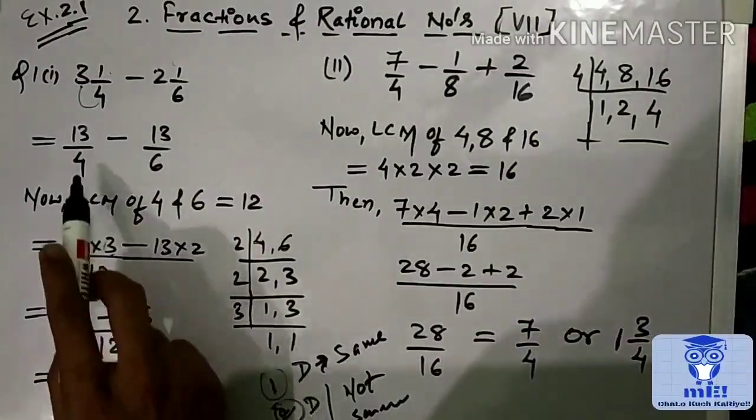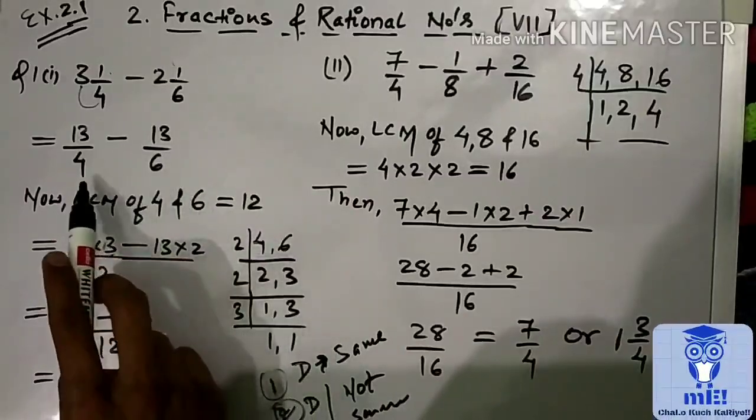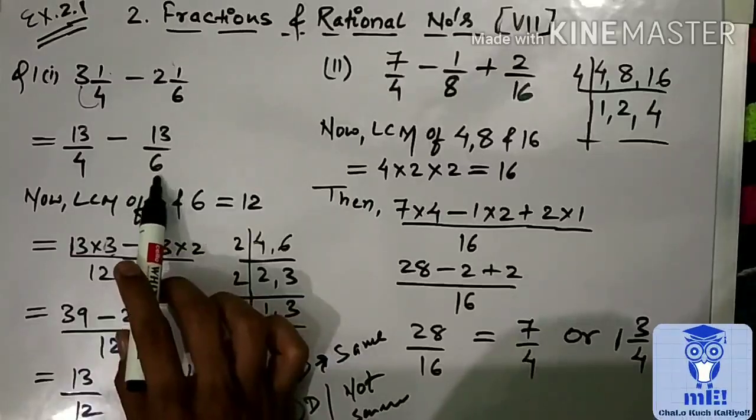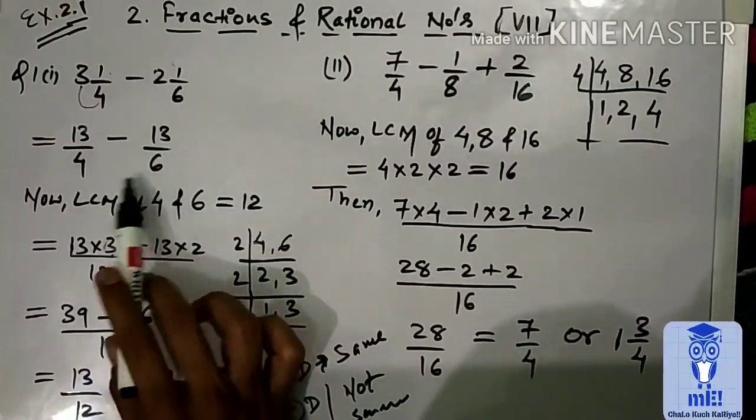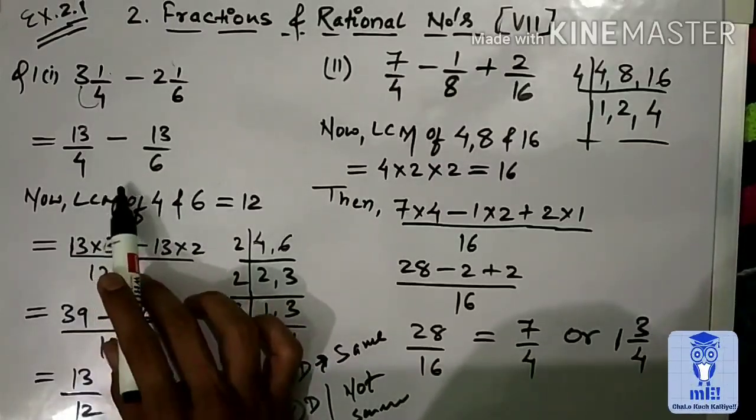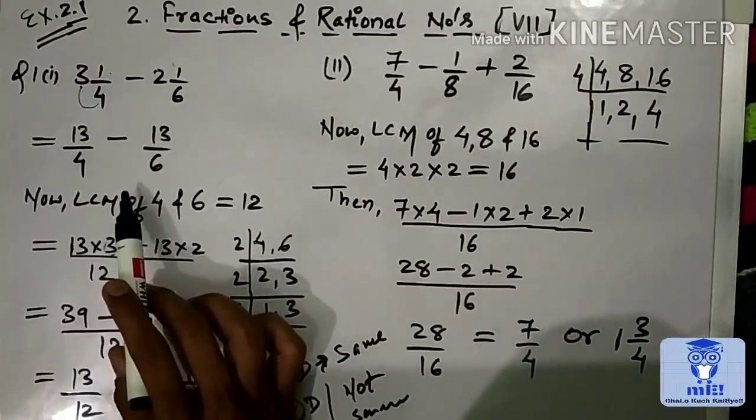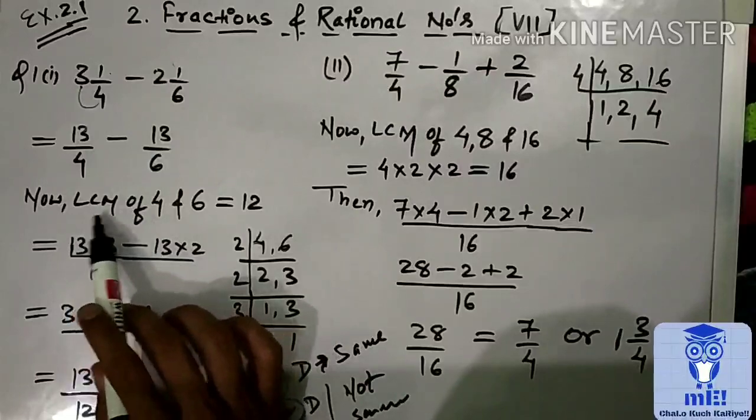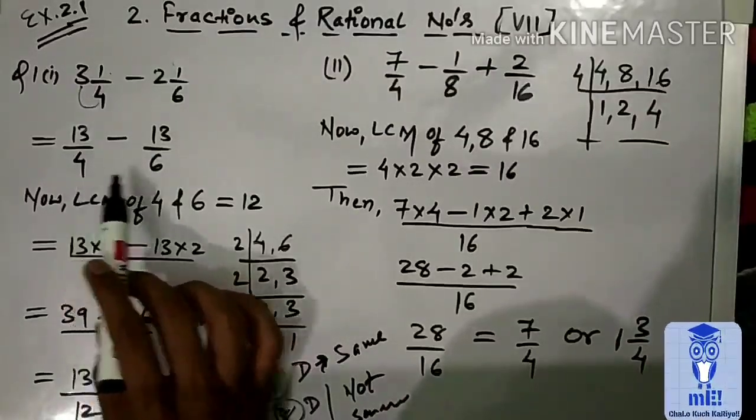Now, if we look at these two numbers, the denominator terms are different. When the denominator terms are different, we apply the LCM rule. LCM of 4 and 6.